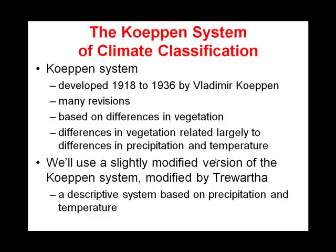Notice that this slide's title is in red, so you know what that means — on this slide is the essence of one of those five questions from Unit 5 that you're going to see on your final exam. It has something to do with how we differentiate between climates. Right here, where it says differences in vegetation related largely to differences in precipitation and temperature — that's the answer.